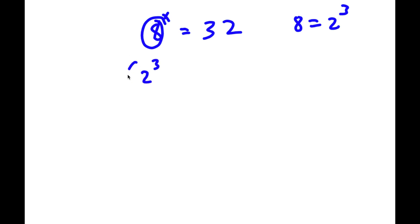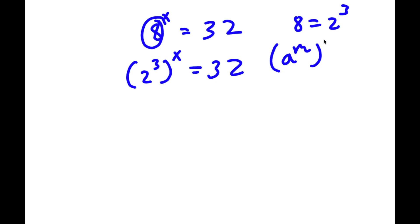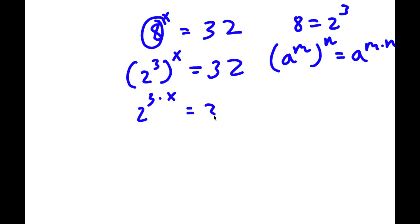So now I have 2 to the power of 3, to the power of x, is equal to 32. Since a to the power of m to the power of n equals a to the power of m times n, I get 2 to the power of 3 times x, which is 2 to the power of 3x. So I have 2 to the power of 3x is equal to 32.